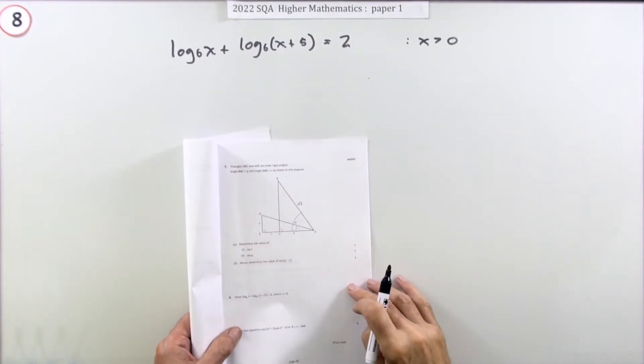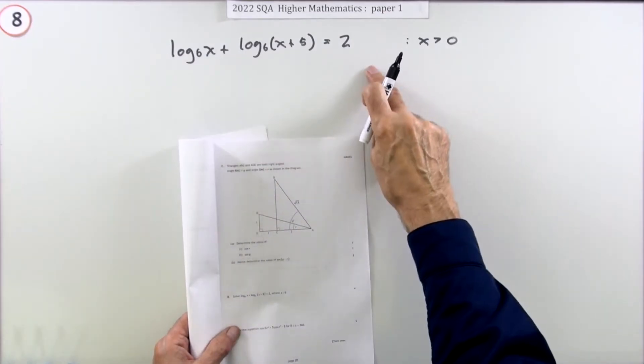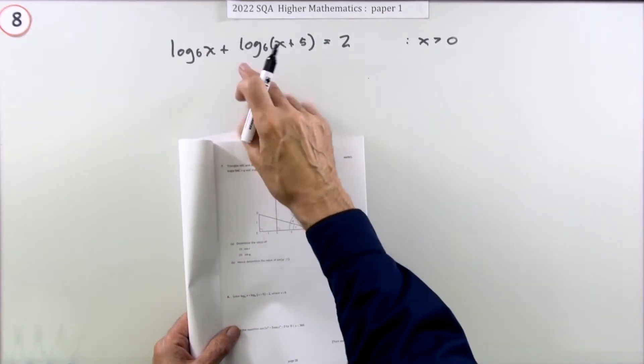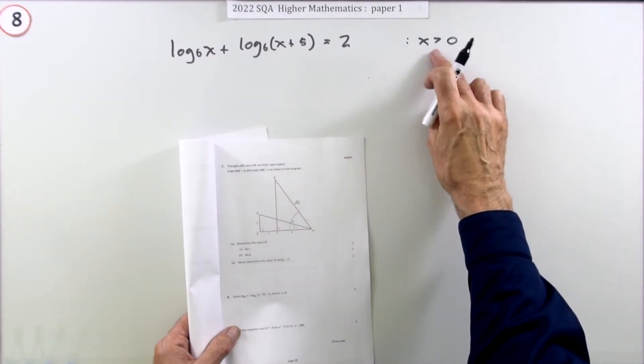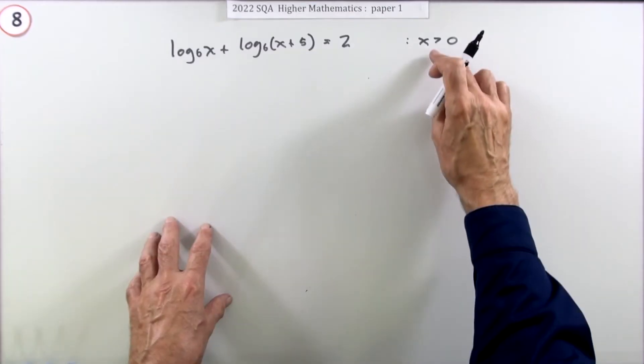Question 8 from the 2022 Higher Maths Paper 1, a four-mark question: solve this equation involving logarithms. This time it does matter that it says x is greater than zero, because you're finding a solution and it will have to fit this description here.